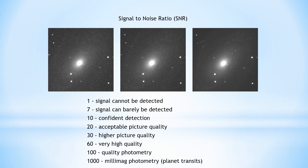Here is M81. On the left is a single, three-minute exposure. In the spiral arms, the speckling from the noise is obvious, so this is a low SNR image. In the middle is a stack of two images, which increases the SNR.